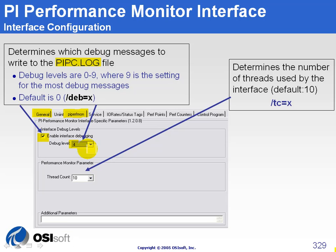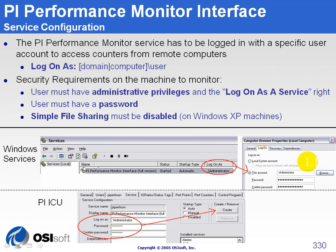You can also change the number of threads the interface will use to get better performance. As mentioned earlier, the service has to be logged on with a specific user account — an account that has administrative privileges to access remote counters. You normally log it with a user belonging to the computer itself or the domain, using the format: domain-name or computer-name backslash user.